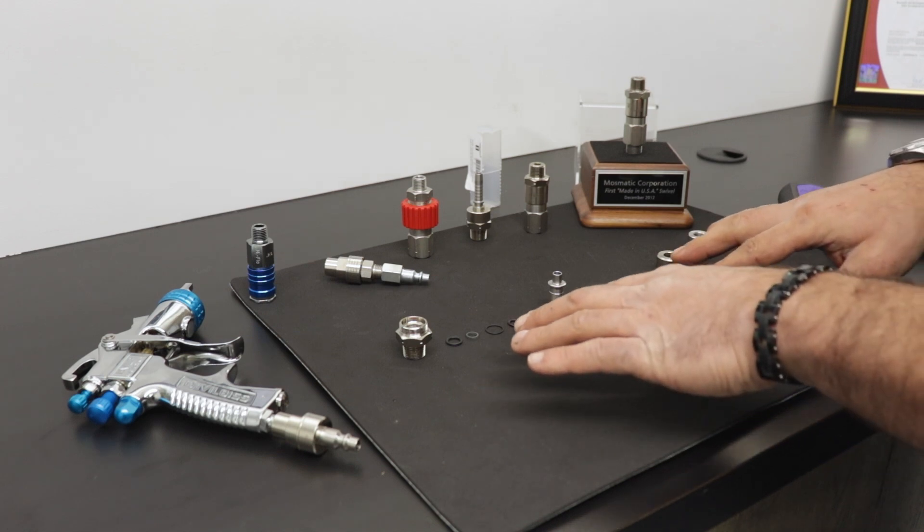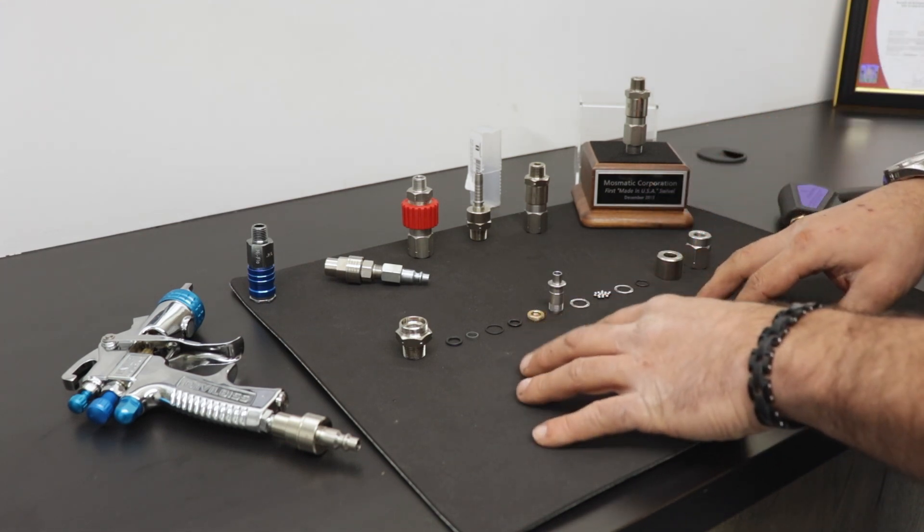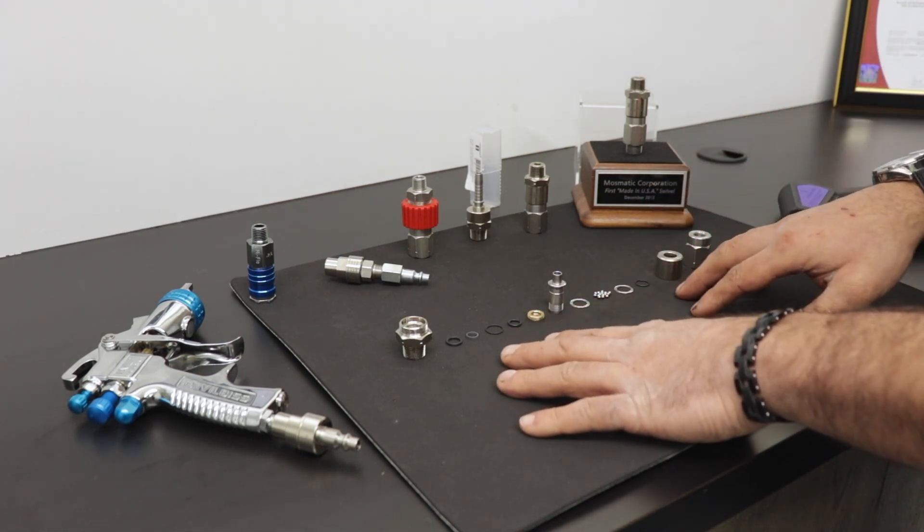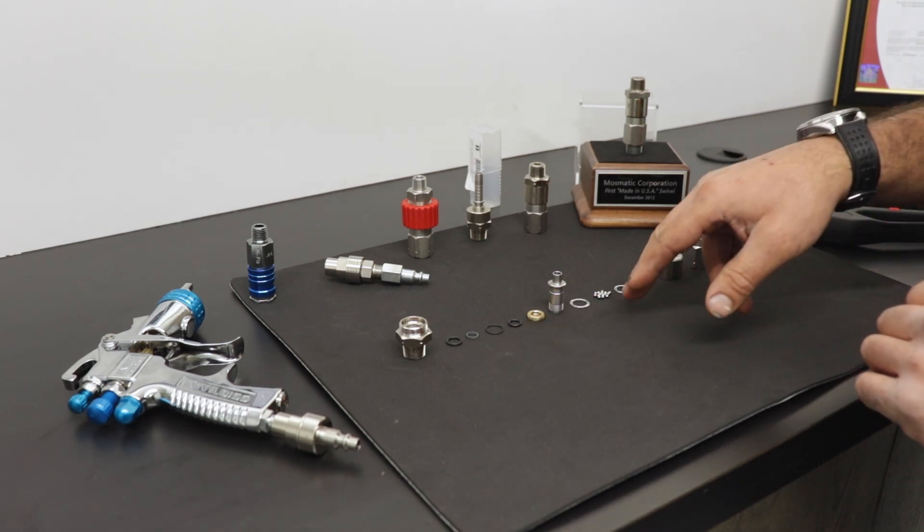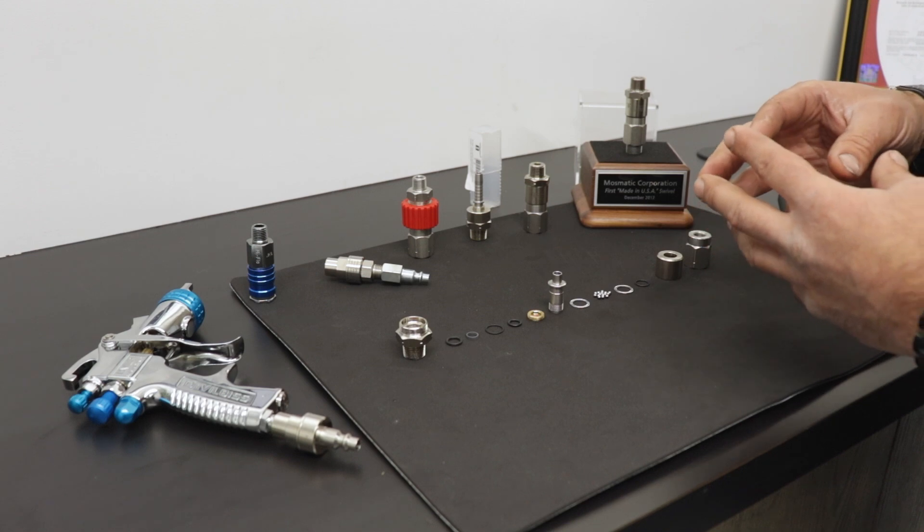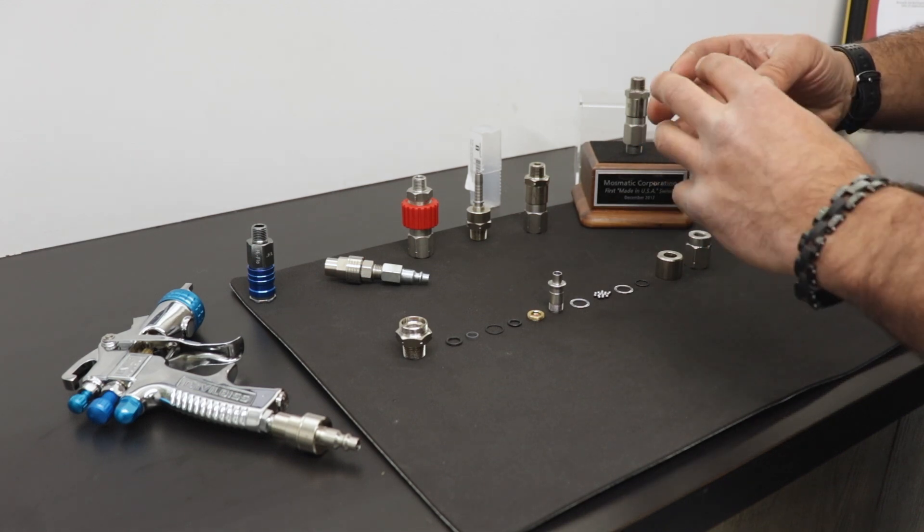You can see from the internal build what sets us aside from the competition is we do five different internal style seals, seven different machine components, with a true thrust bearing that's going to be self-lubricating and give you that smooth operation under pressure.